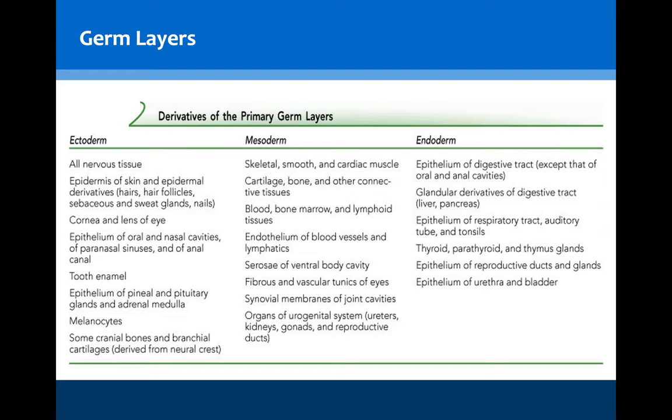You'll recall this diagram from part three and the importance of knowing the derivatives of the primary germ layers. Today we'll be focusing on the endoderm, specifically the formation of the GI tract, the liver, the gallbladder, the pancreas and the lungs.